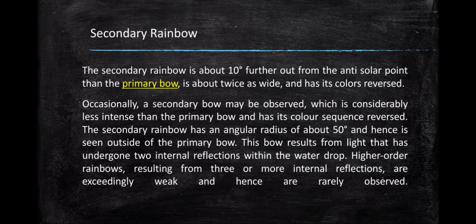Now, let's talk about secondary rainbow. Secondary rainbow is about 10 degrees further out from the anti-solar point than the primary bow. Secondary rainbow is about twice as wide and has its color reversed. Unlike primary rainbow, secondary rainbow has its color reversed and it's larger than the primary bow.